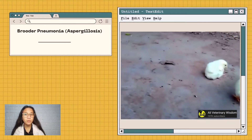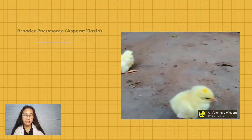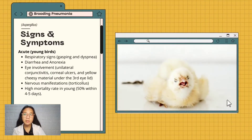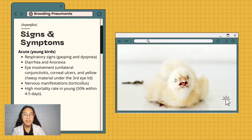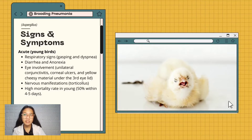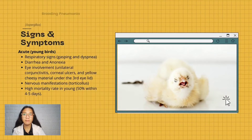Young chicks of 1 to 2 weeks of age are affected. The signs and symptoms of Brooder Pneumonia or Aspergillosis in young birds include respiratory signs, diarrhea and anorexia, eye involvement, nervous manifestations, and high mortality rate — 50% within 4 to 5 days.